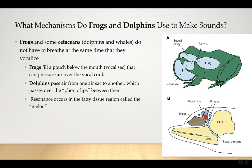Dolphins have two air sacs and phonic lips — as air passes across the lips it creates vibration. This makes sense since dolphins are aquatic but breathe air. Like a bagpipe, they fill up a bag of air and pass it over the phonic lips in a way that's separate from their breathing, so they can vocalize underwater without wasting breathing air. Dolphins also have the melon, a fatty tissue structure that produces resonance.